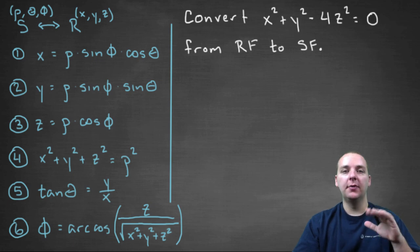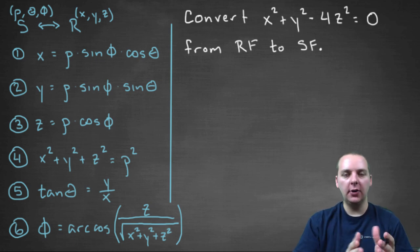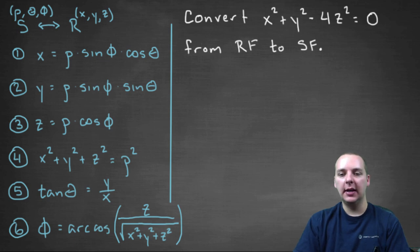In this exercise we're being asked to convert the equation x² + y² - 4z² = 0 from rectangular form that it's currently in with the x, the y, and the z into spherical form that has a ρ, θ, and φ instead of x, y, and z.